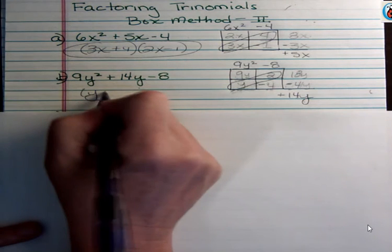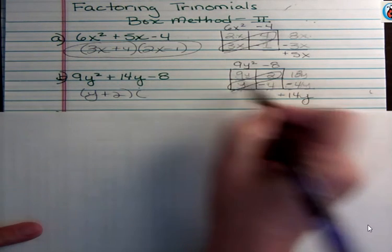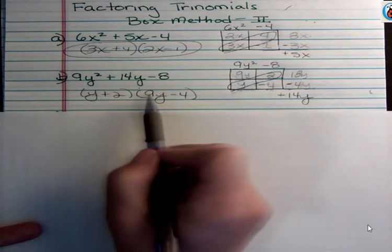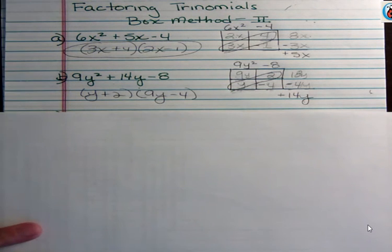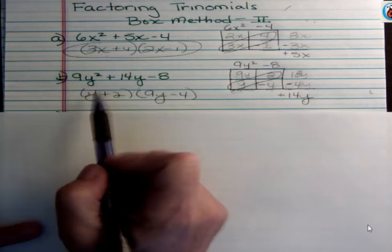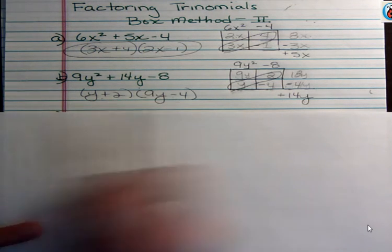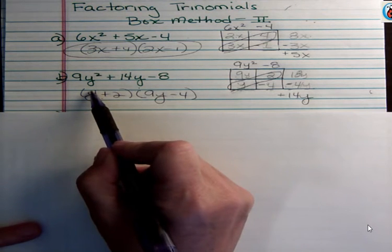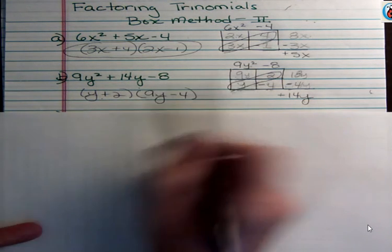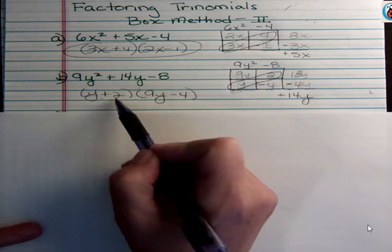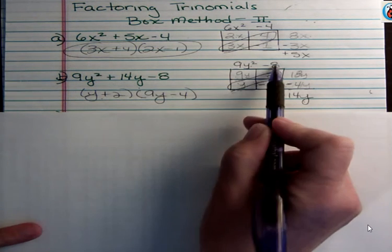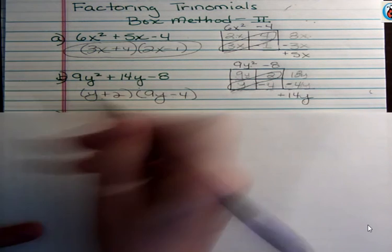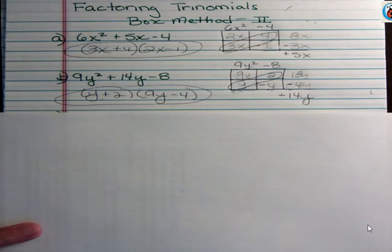Remember, it's on the diagonal. So y plus 2 and 9y minus 4. Usually somebody asks me, does it matter which one you put first? It totally does not matter. You just have to make sure that you have a y plus 2, either here or there, and you have a 9y minus 4, either here or there. And we can always check by multiplying 9y², minus 4y, positive 18y, and negative 8. And these two terms add to 14y, which is what we need. So we factored it and we checked it.